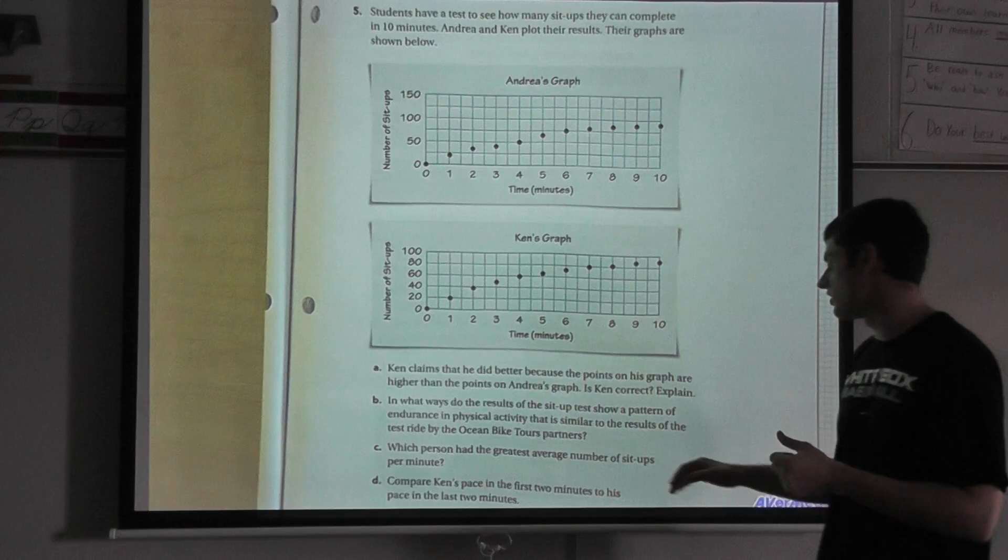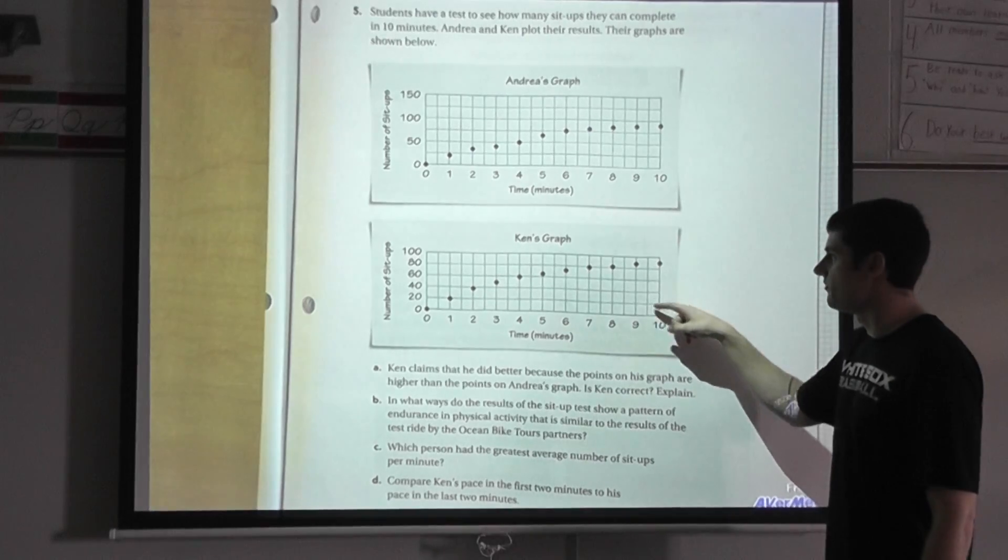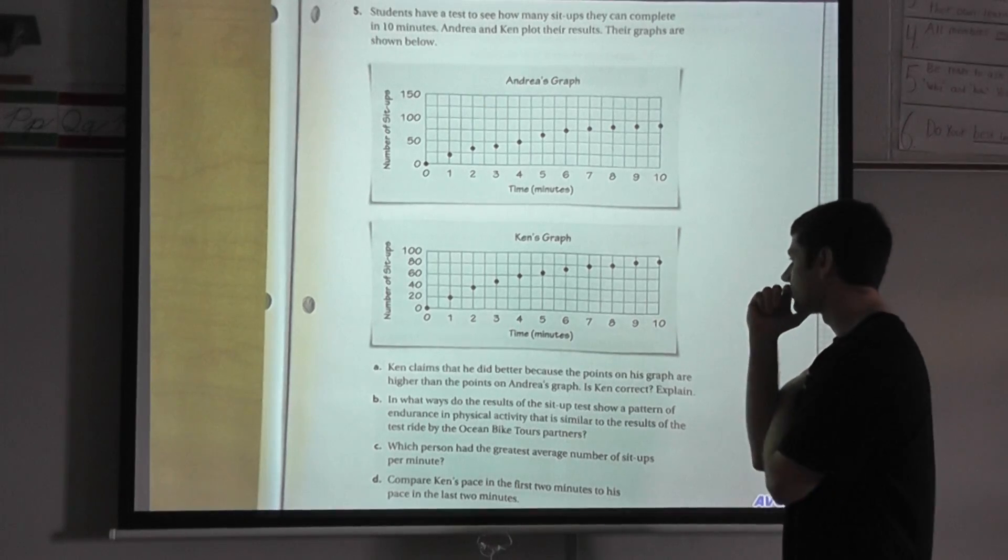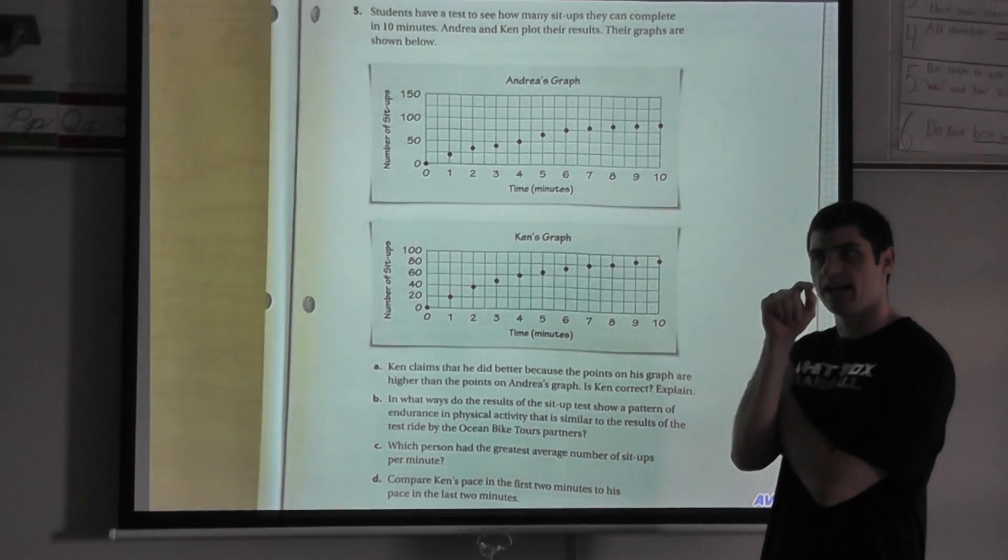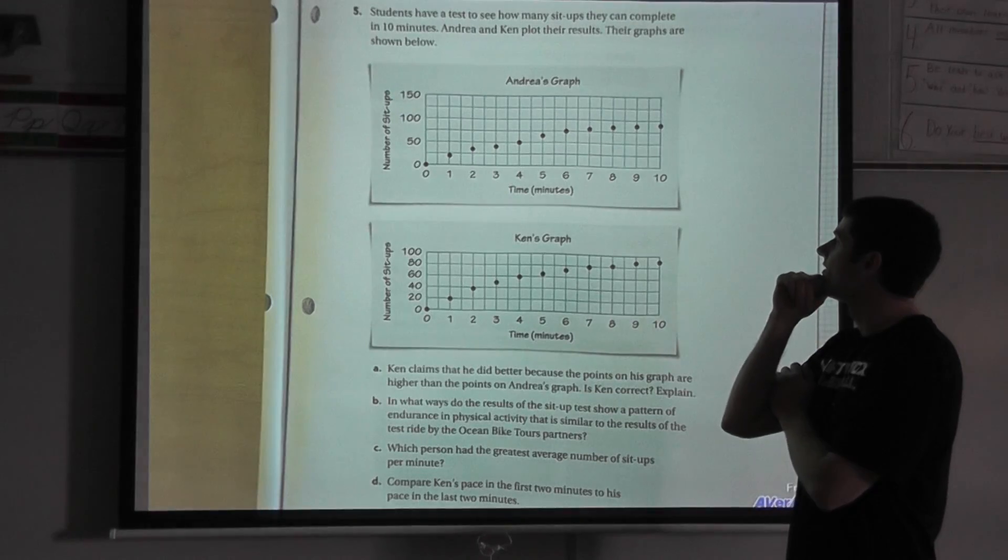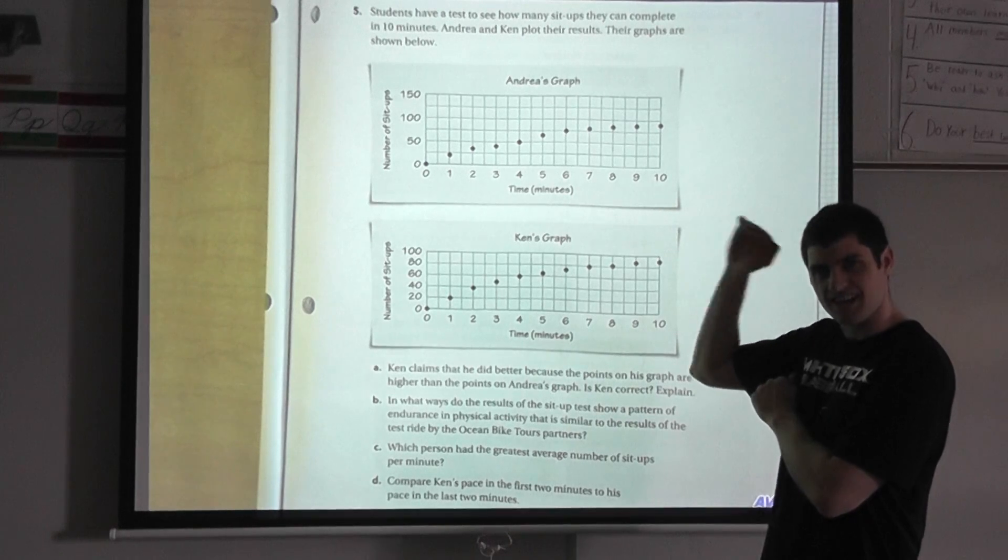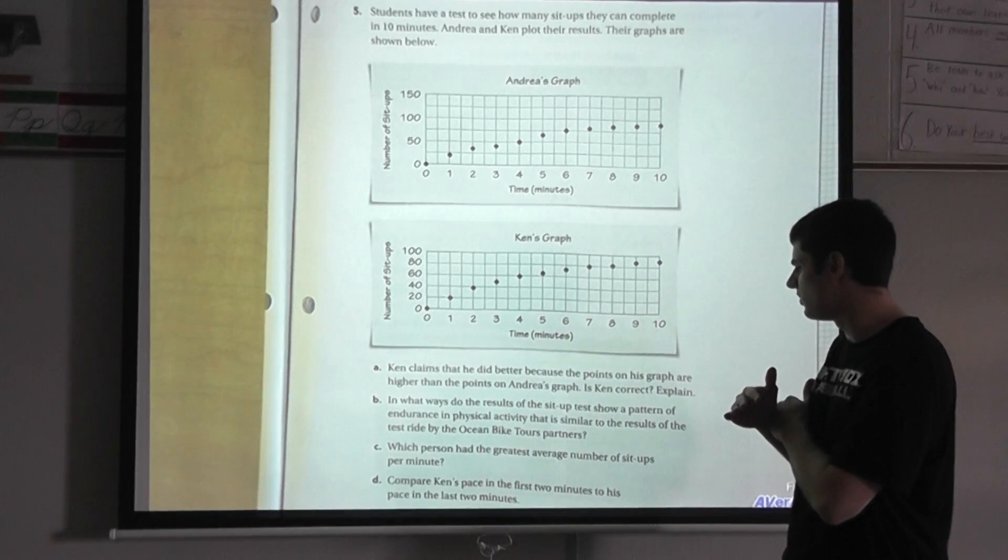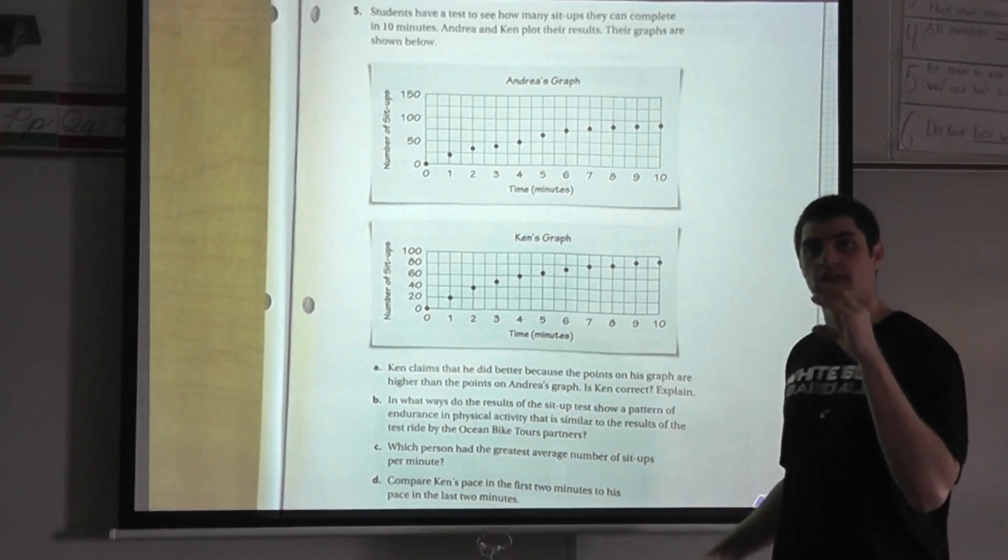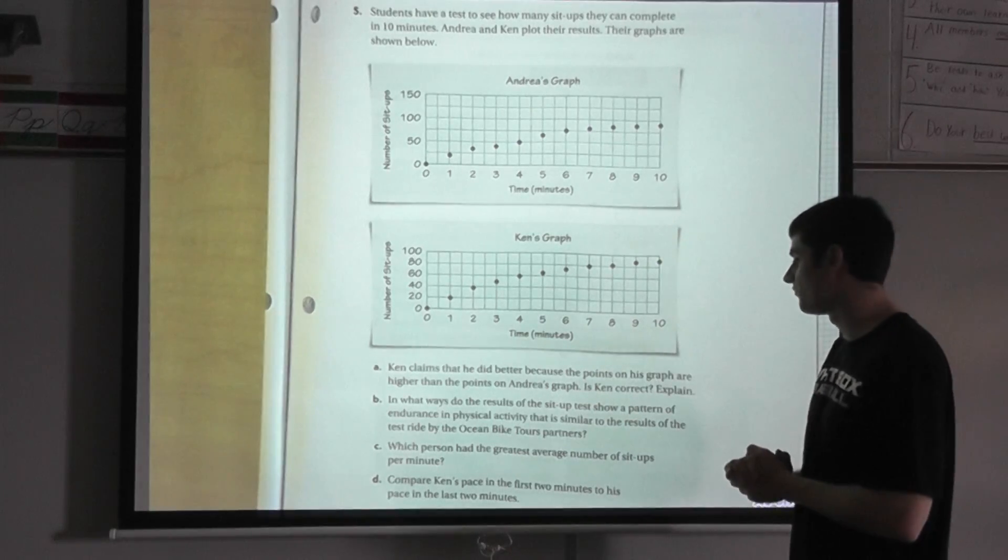Part C: Which person had the greatest average number of sit-ups per minute? Well, how do I figure that out? Let's take a look. In 10 minutes, Ken did 90 sit-ups. So 90 sit-ups in 10 minutes. So they did 9 sit-ups per minute. That's his rate. Let me look at Andrea's graph. She did 90 in 10 minutes. So 90 sit-ups divided by 10 minutes is 9 sit-ups per minute. So who had the greatest average? They're both the same, right? They both did 9 sit-ups per minute. That's the rate that they both were able to complete their sit-ups there.